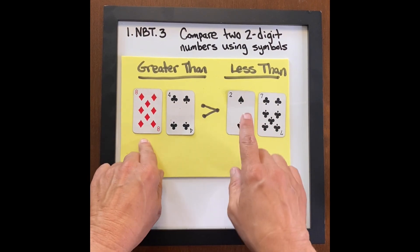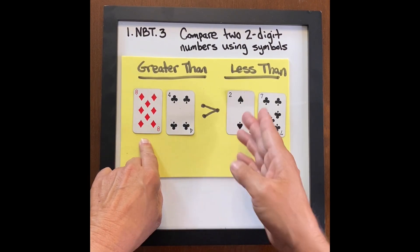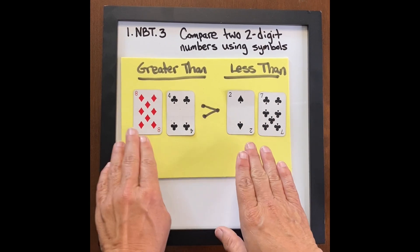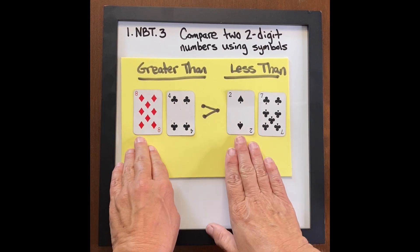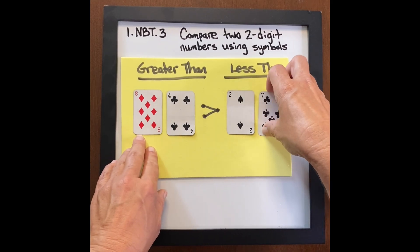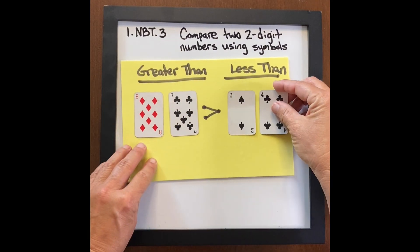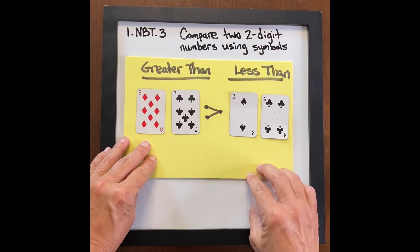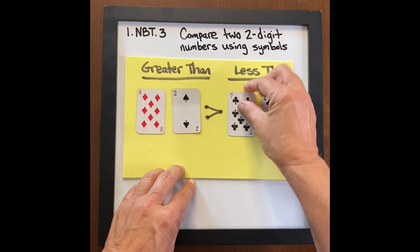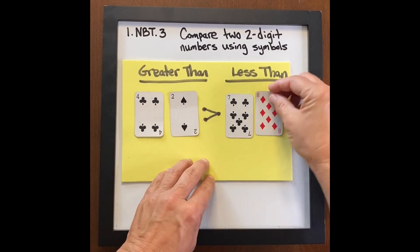That leads into great conversation about why switching made it work. Here we have eight tens, here we only have two tens. Eight tens has more value because it's worth 80. You can also ask students: what happens if I also do this? Is this still true? Is this still true?